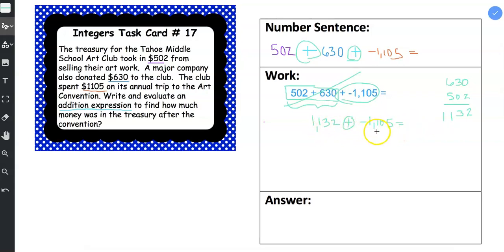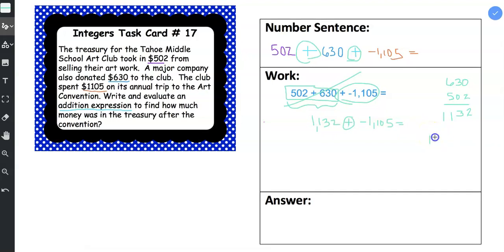So signs are different, we subtract, and I put the larger number on top in terms of absolute value. So 1,132 is larger. And then I subtract 1,105.